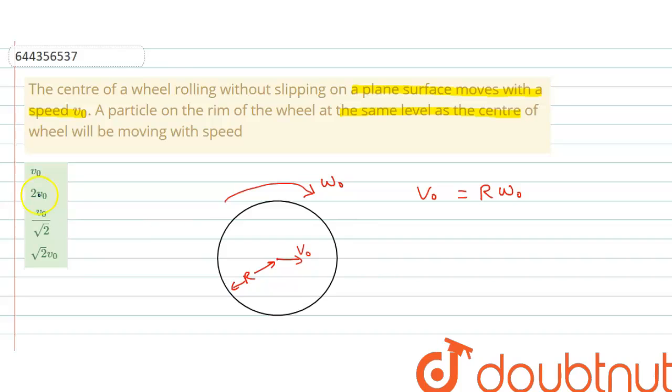Now, here is a particle which is at the same level of center. So, we have to find speed of this particle. The speed of this particle is due to two reasons. One, due to translational motion, which is v0. So, here, v0 in this direction.